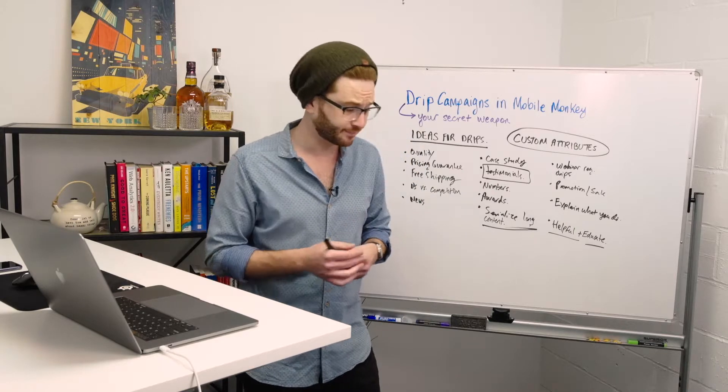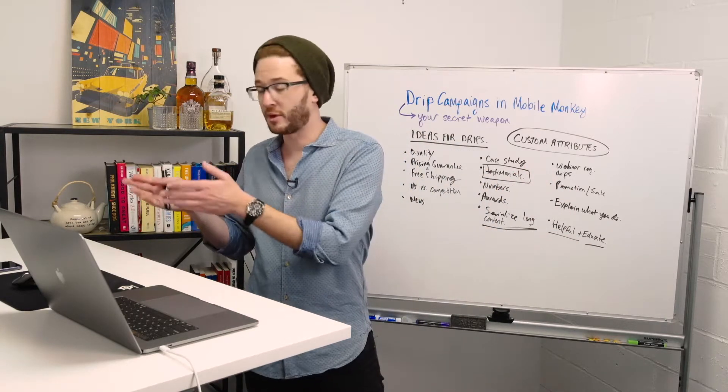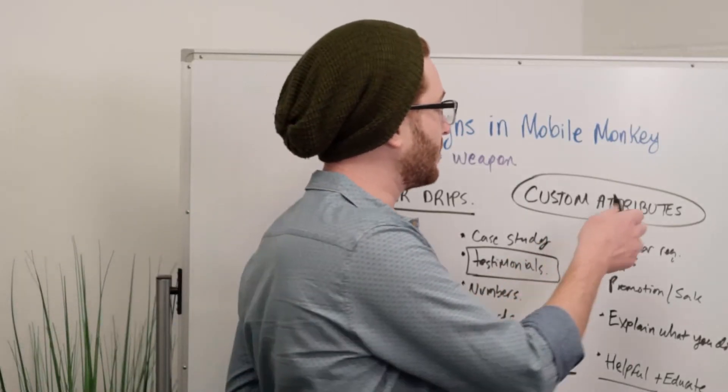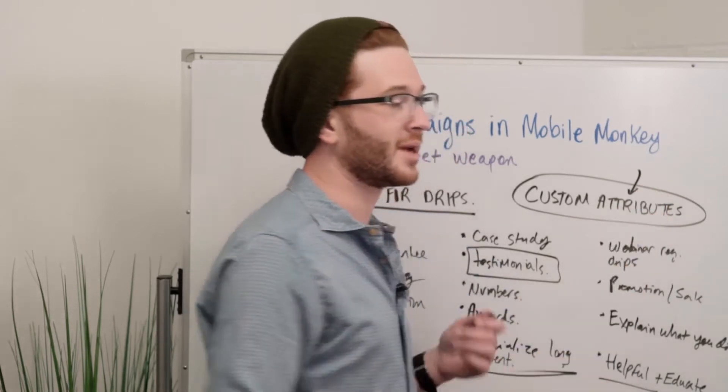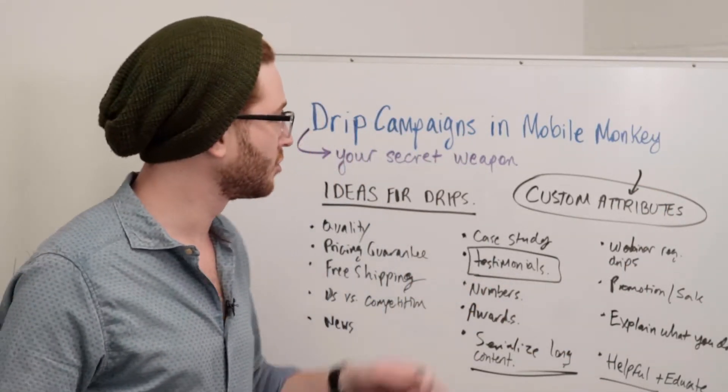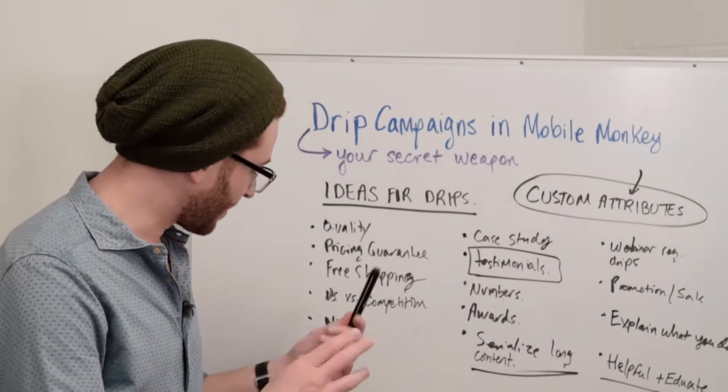If you want to have a drip campaign to people who are in the market for a certain service, or people who have a bigger company, then use those custom attributes that you've been collecting through your blast, through your messenger click to call ads, through your other bot workflows, through your content download forms. Use those custom attributes in your drips and segment and personalize that information. These are a bunch of different good ideas.